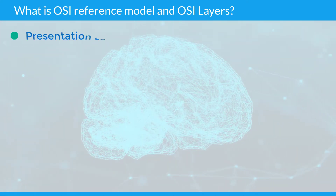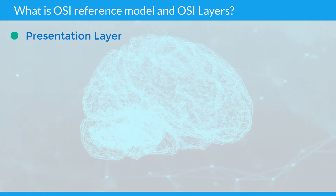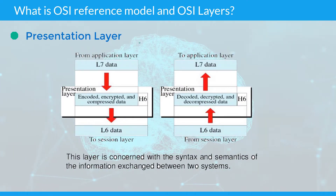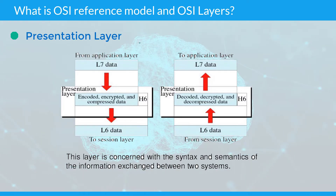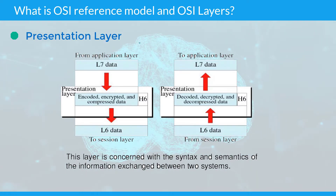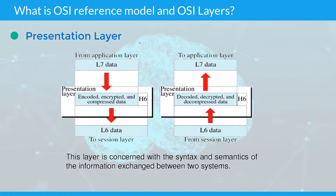Presentation layer: This layer is usually part of an operating system and converts incoming and outgoing data from one presentation format to another. For example, from clear text to encrypted text at one end and back to clear text at the other.